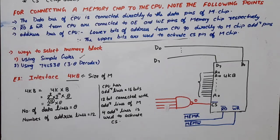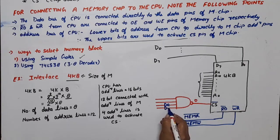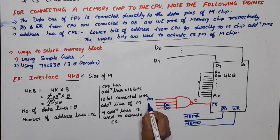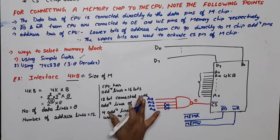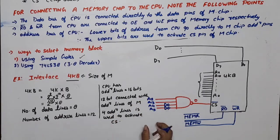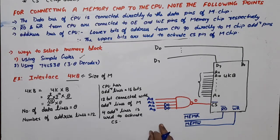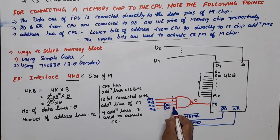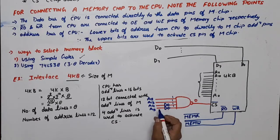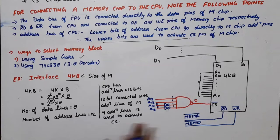For this connection, the higher order address bits A12, A13, A14, and A15 are connected to the NAND gate. For the NAND gate output to be 0, all inputs must be 1. So A12=1, A13=1, A14=0, A15=0 — here A14 and A15 inputs pass through inverters (NOT gates) before the NAND gate, so their actual values are 0, producing 1 at those NAND inputs. This is the connection of the 4KB memory chip with the 8051.